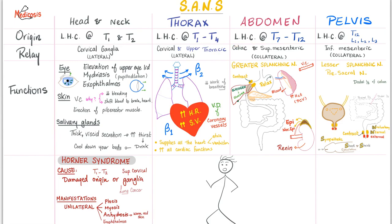Next, abdomen. Sympathetic origin. Lateral horn cell T7 to T12. Relay. Now, these are collateral ganglia, such as celiac and superior mesenteric. These are collateral. These are prevertebral. Functions. The function here is by the greater splanchnic nerve. So, greater splanchnic nerve, sympathetic in the abdomen. Lesser splanchnic nerve is sympathetic in the pelvis. Cool. Tell me about the greater splanchnic nerve.